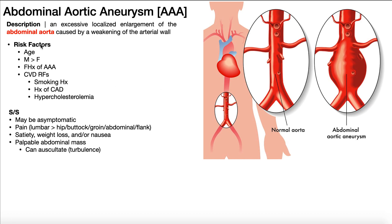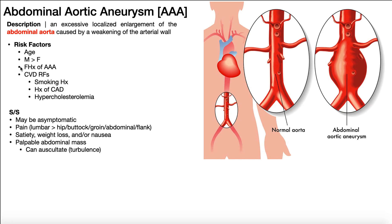The risk factors for a triple A: number one is simply age — as we get older, our vessels become weaker, making a triple A more likely. Men are more likely to get a triple A than women. Having a family history of a triple A also increases your likelihood. Then there are cardiovascular disease risk factors that overlap with other aspects of cardiovascular disease, including smoking history, a history of coronary artery disease, and hypercholesterolemia.